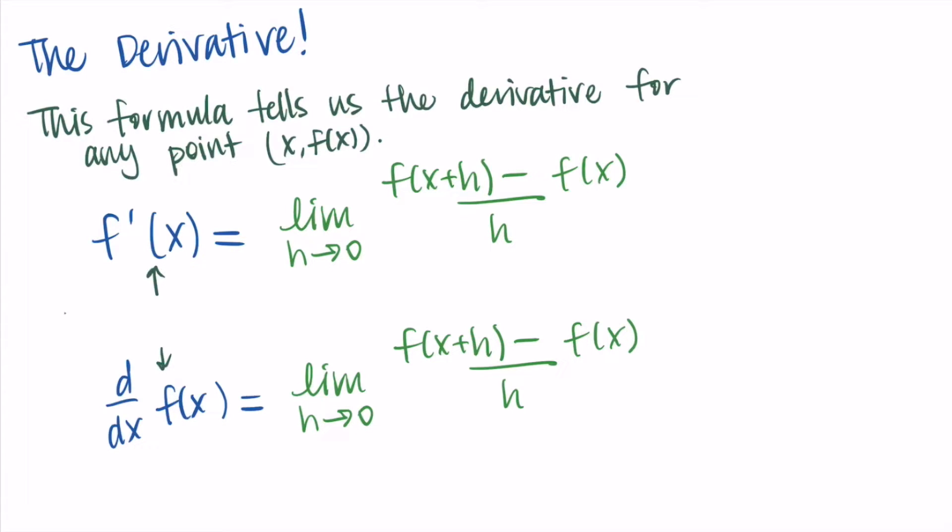But for right now I just want you to think of this as two ways to write the same thing. The limit definition of the derivative is just a formula that tells us the derivative for any point. What I'm really trying to point out is that there is f prime of x and d dx of f of x, and these are two ways to write the same thing, which is the derivative of f of x.